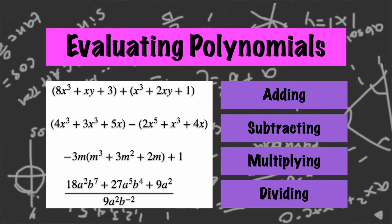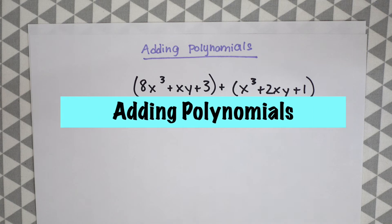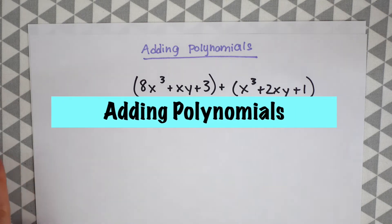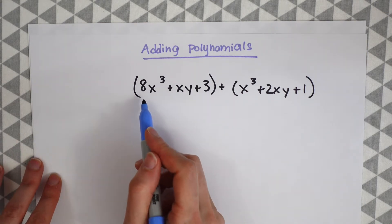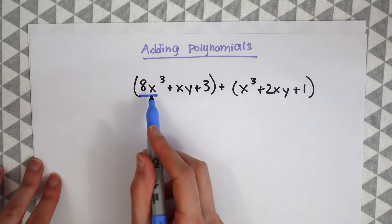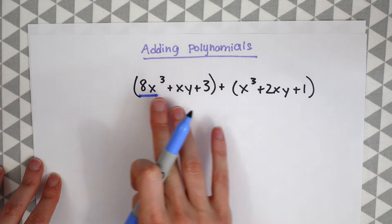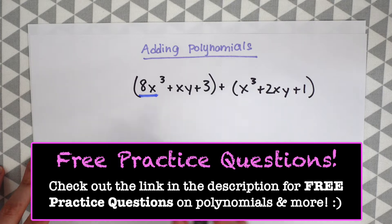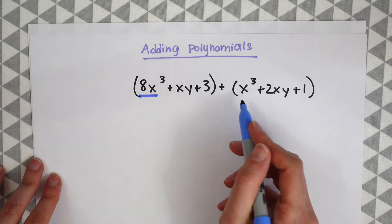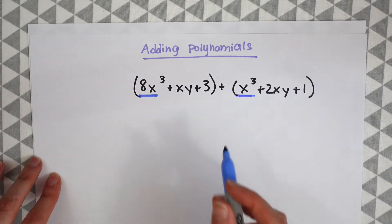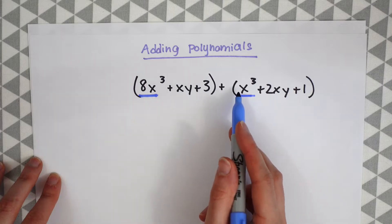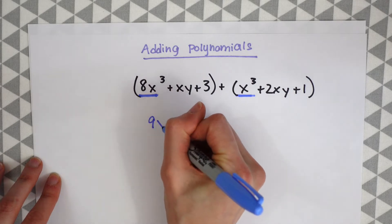So let's start with our first example here, adding polynomials. So we want to look for the like term. So if we look at 8x cubed we want to see if there's any x cubed throughout this entire expression that we can add this with. And if you notice over here we have another x cubed so we just have 8 plus 1x cubed is just going to be 9x cubed.